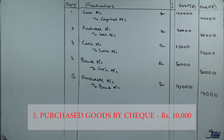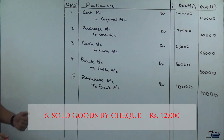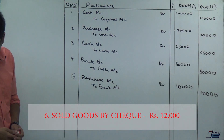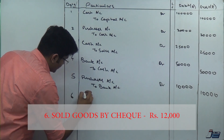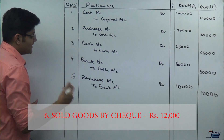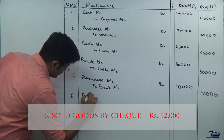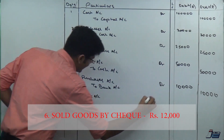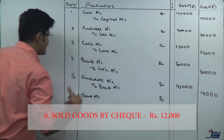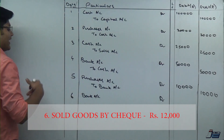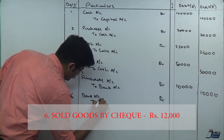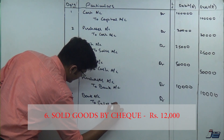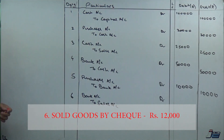Entry number six: sold goods by cheque, rupees 12,000. This time I am receiving payment by cheque, so my bank will increase. Bank Account is debited because a cheque is coming in and the money drops directly into the bank. So: Bank Account debit to Sales Account, amount 12,000.